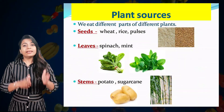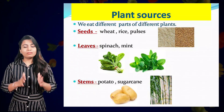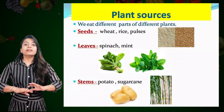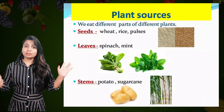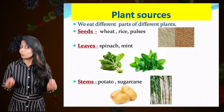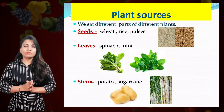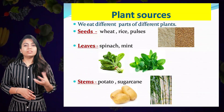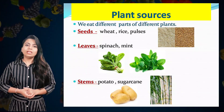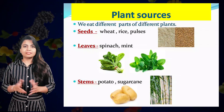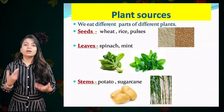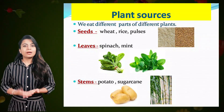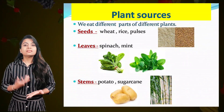The first source is plants. When we talk about plants, we eat different parts of different plants, not only one thing. First of all, let's come to the seeds. We eat seeds of lots of plants — for example, wheat, rice, pulses, and cereals.